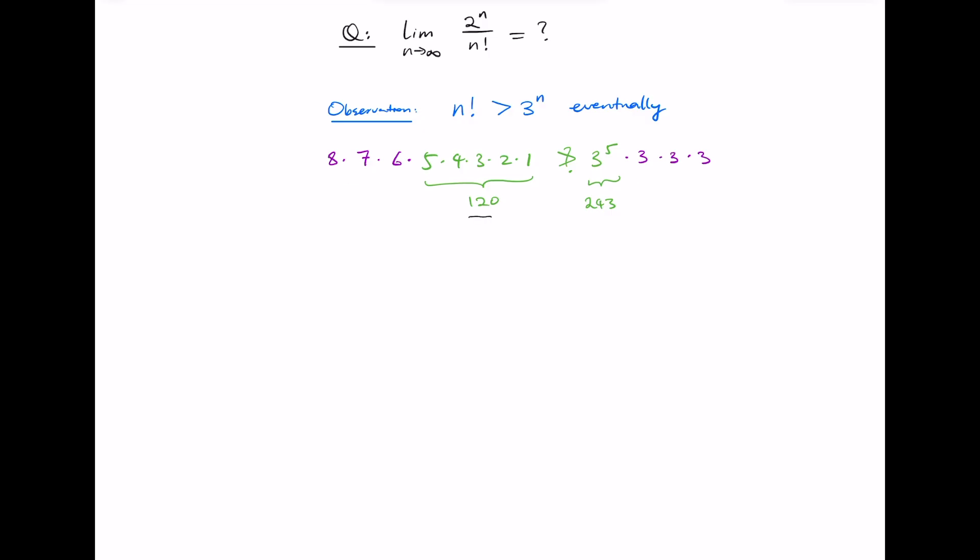Now if you have two positive numbers, regardless of what they are to begin with, if one is growing twice as fast as the other one, it's eventually going to overtake it. And indeed we can calculate that 7 factorial equals 5040, whereas 3 to the 7 equals 2187. So 7 factorial is bigger than 3 to the 7.